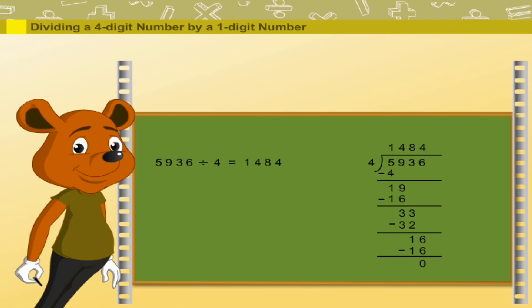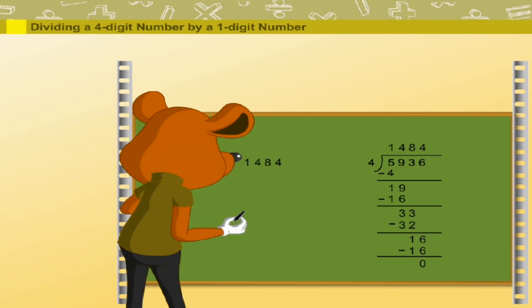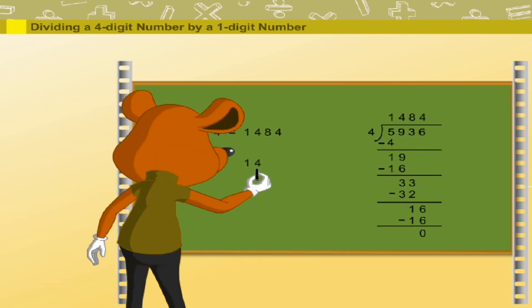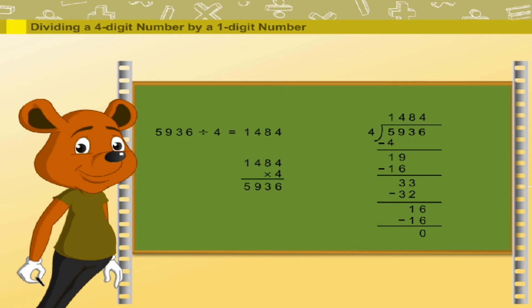Robby now cross checks his answer. He multiplies 1484 by 4. Robby has got 5936. The dividend of his first question. You are absolutely right Robby.